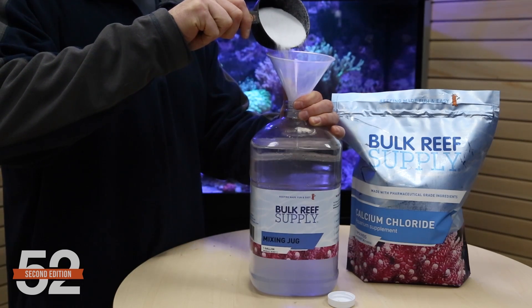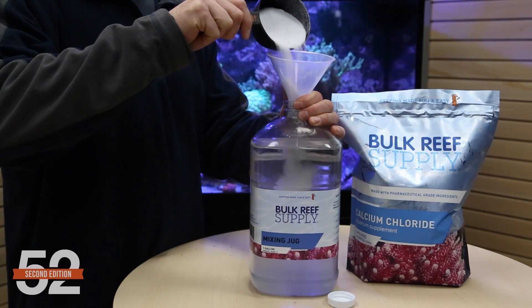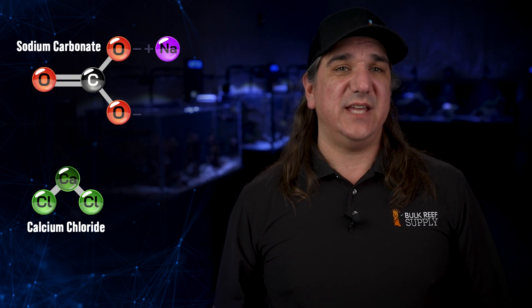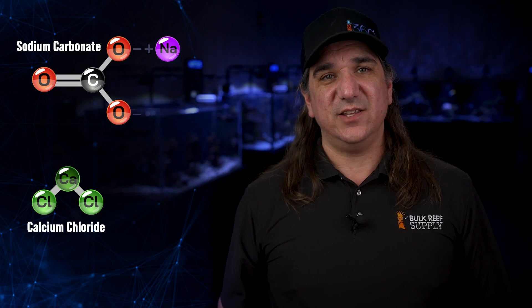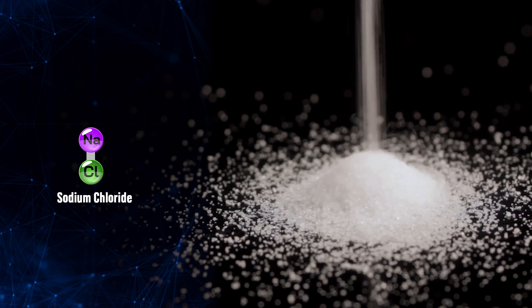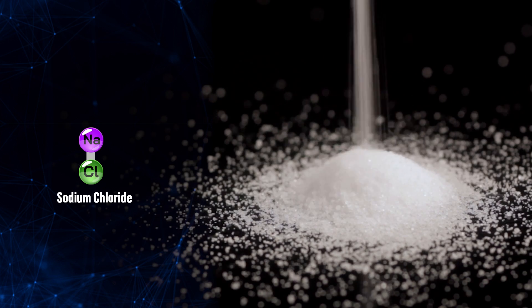The reason why two-parts raise salinity is they're all based on salt. The calcium portion is based on calcium chloride, the alkalinity portion based on sodium carbonate or bicarbonate. Once dosed in the tank, the carbonate alkalinity ionizes into the water and leaves the sodium behind. The calcium ionizes into the water and leaves the chloride behind, effectively polluting the tank with excess sodium chloride — table salt — that raises the salinity.